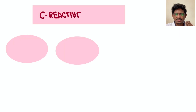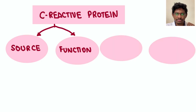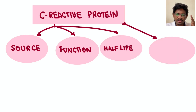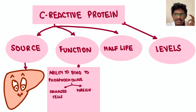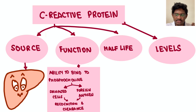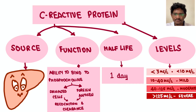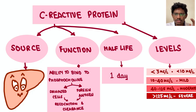The best inflammatory marker is CRP. C-reactive protein is produced from the liver. Its function is that it has the ability to bind to phospholipids — wherever damaged cells are present, it will go and bind there, facilitating clearance of those damaged cells and bacteria. Its half-life is only one day. Normal CRP is less than 3 or less than 10. Mild elevation: 10 to 40. Moderate elevation: 40 to 125. Severe elevation: more than 125.